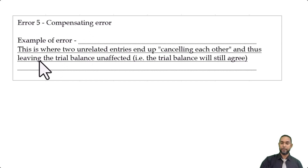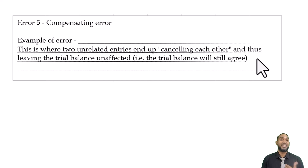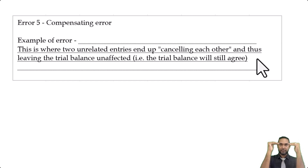Compensating error: this is where two unrelated entries end up canceling each other out, leaving the trial balance unaffected. For example, if sales (a credit balance account) is overstated by $100 and purchases (a debit balance account) is also overstated by $100, the debit side is too high and the credit side is too high by the same amount — they cancel out and the trial balance still agrees.